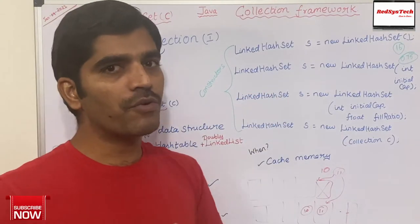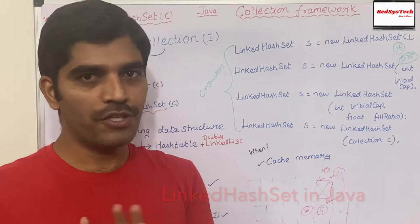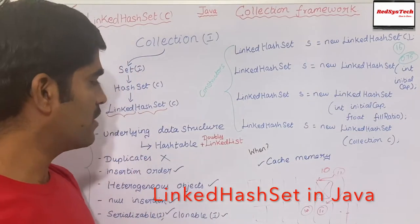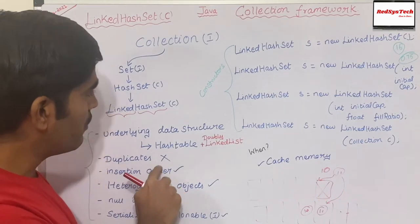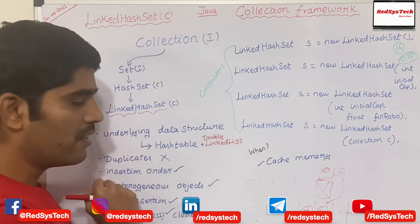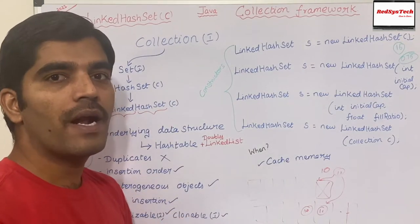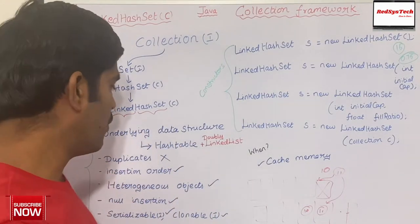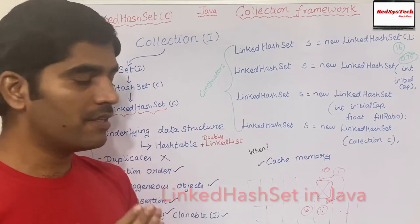Now the question comes: when do we go for LinkedHashSet? It's based on the requirement. What is special about LinkedHashSet? Duplicates are not allowed, and the insertion order is maintained. This is the difference between HashSet and LinkedHashSet. If you want to maintain insertion order and at the same time not allow duplicate records, then you go for LinkedHashSet. If the requirement says insertion order doesn't need to be maintained but duplicates should not be allowed, then you can go for HashSet.